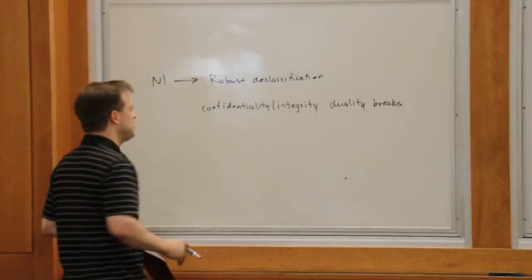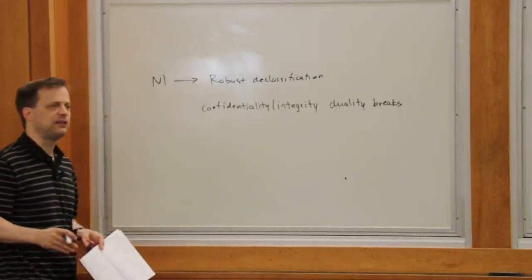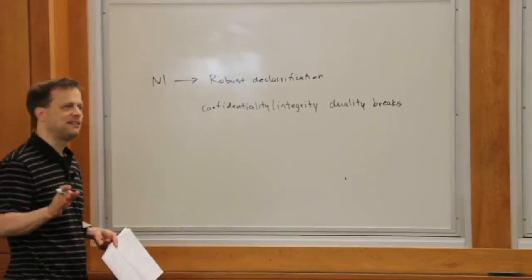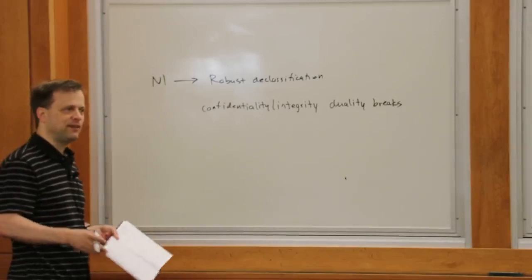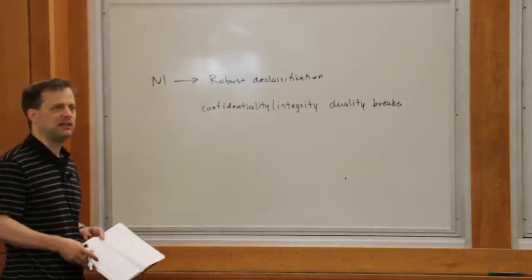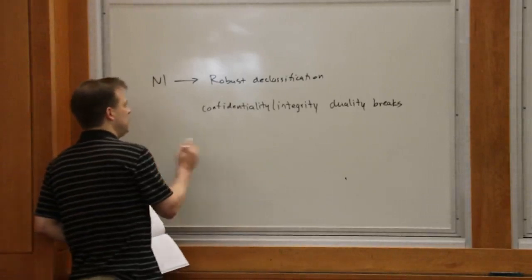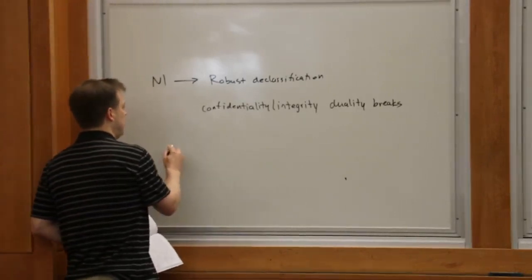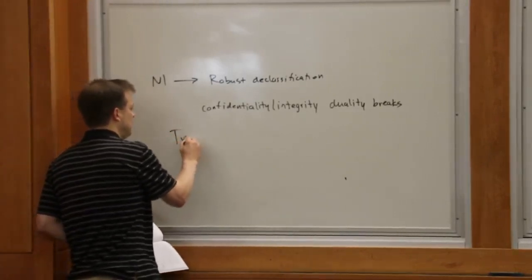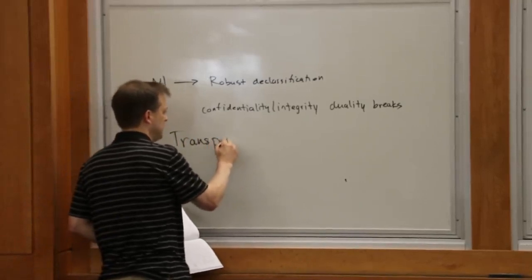It actually took a long time, like about 15 years, but then we realized that there was a way to restore that duality and restore that symmetry. We identified a dual to robust declassification, which we call transparent endorsement.